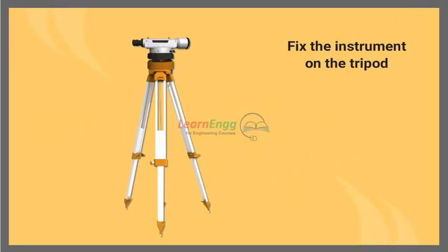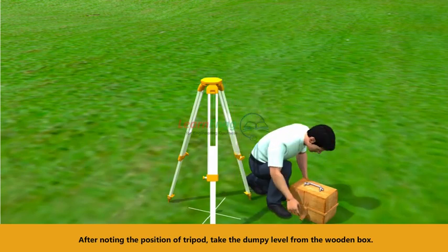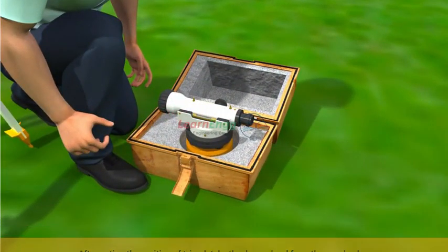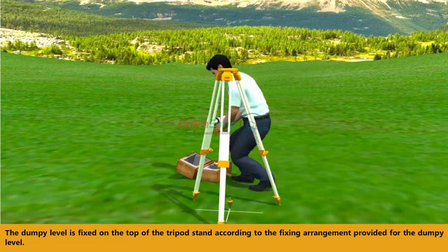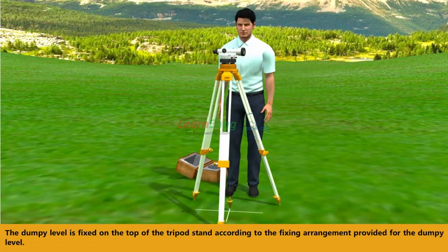Fix the instrument on the tripod. After noticing the position of tripod, take the dumpy level from the wooden box. The dumpy level is fixed on the top of the tripod stand according to the fixing arrangement provided for the dumpy level.